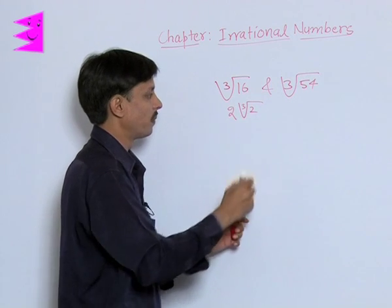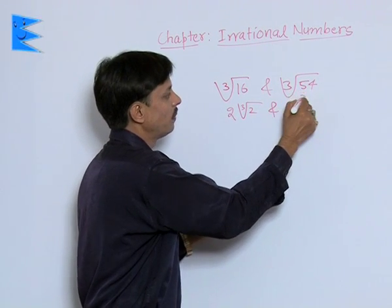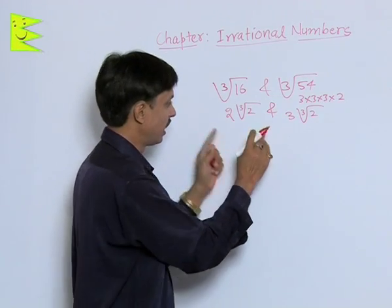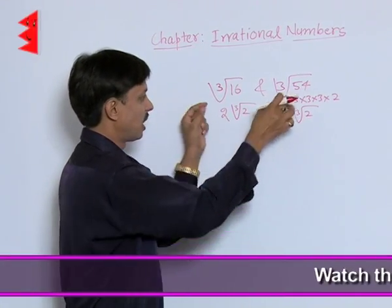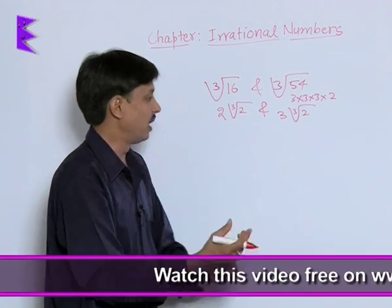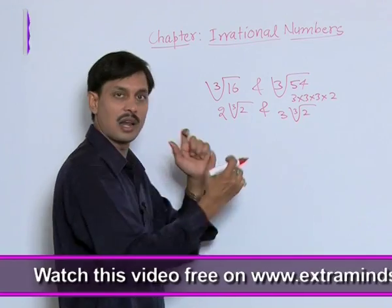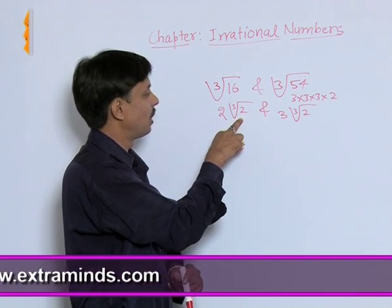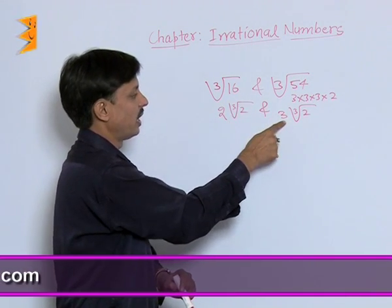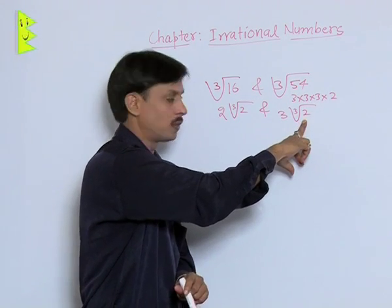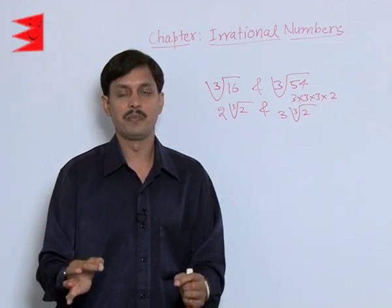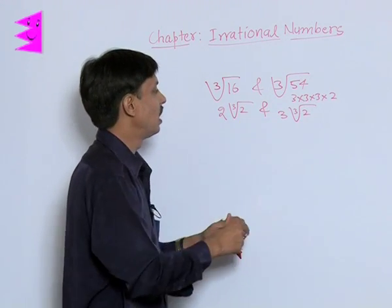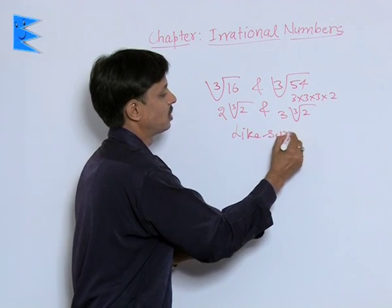So cube root of 16 becomes 2∛2. For cube root of 54: 54 is 3 × 3 × 3 × 2, so this becomes 3 into cube root of 2, which is 3∛2. Yes, these are like surds — they can be expressed in mixed form. They are like surds because the first surd has rational part 2 and irrational part ∛2, and the second has rational part 3 and irrational part ∛2. Since both have the same irrational part, these surds are like surds.